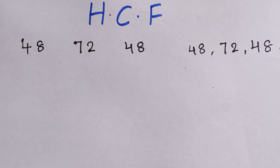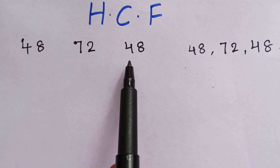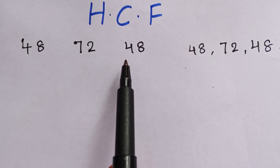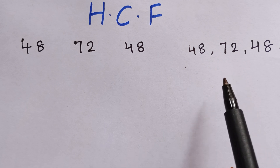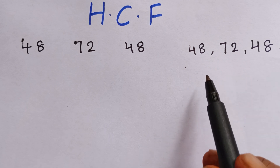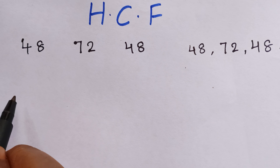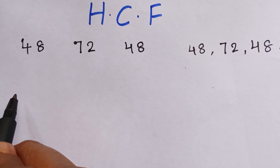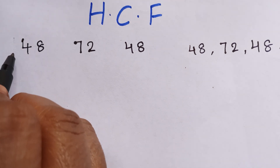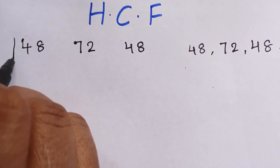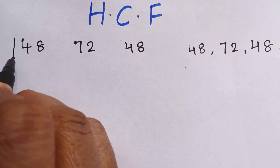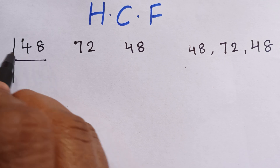Today we are going to learn about HCF. HCF we can find in two ways. One is where we take individual digits, make factors, and solve it. The other is the normal method where we take three numbers at a time and find individual digits to find the factors, then find the highest common factor.